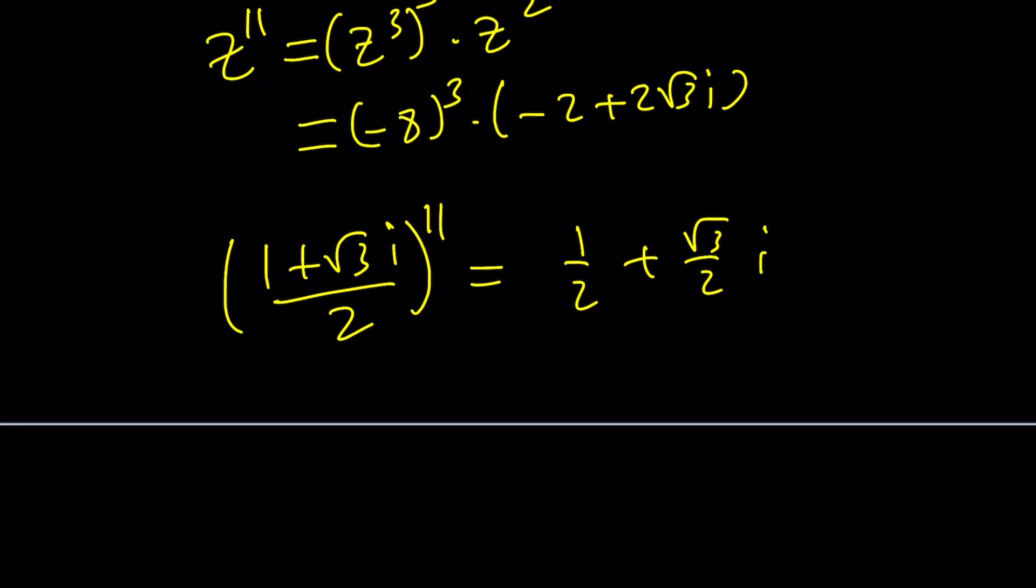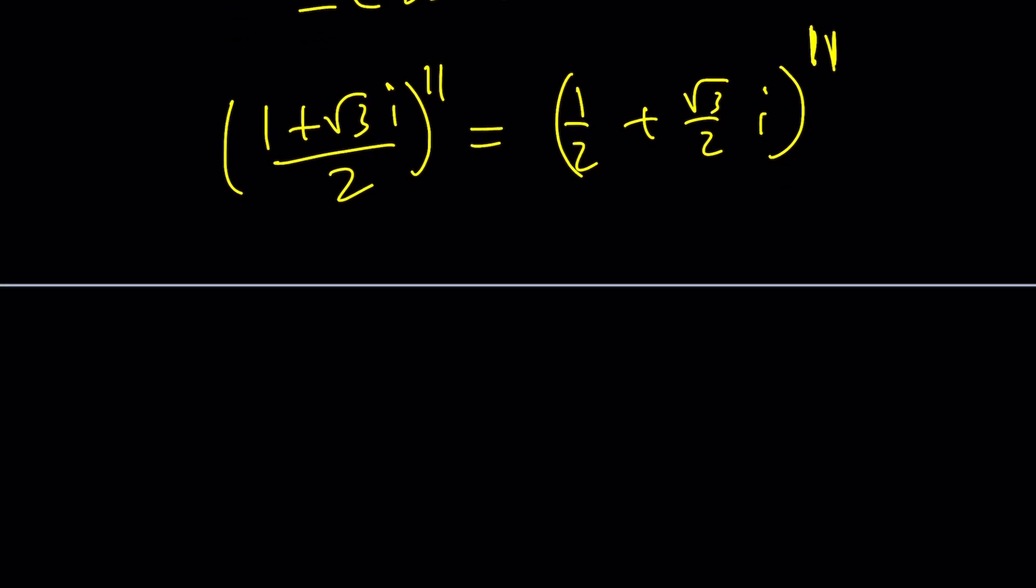And guess what I'm going to do? I'm going to write it in polar form. So, to write it in polar form, I'm going to do the following. This is basically the cosine of 60 degrees, which is pi over 3, plus i times sine pi over 3. And when you raise it to the 11th power, you're going to get cosine 11 pi over 3. But what is 11 pi over 3, right?